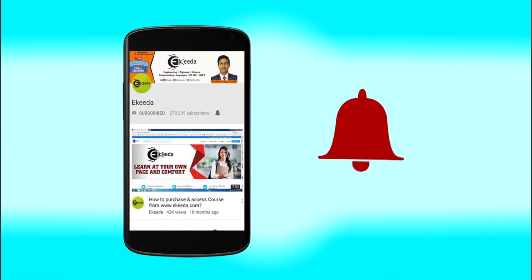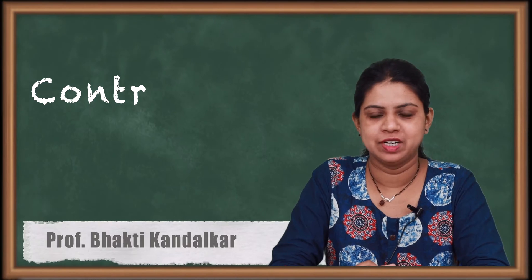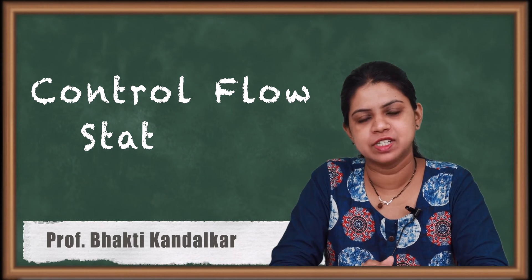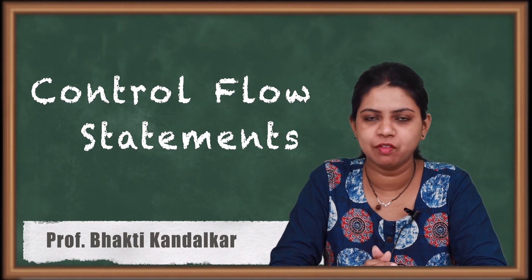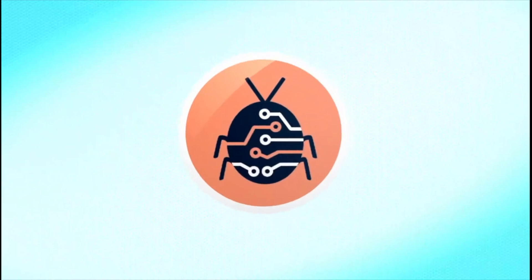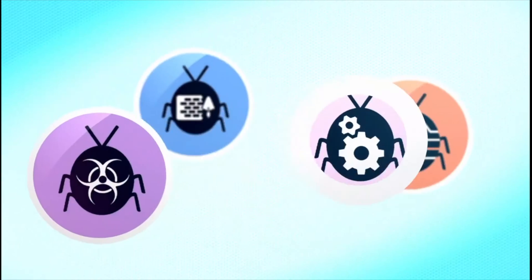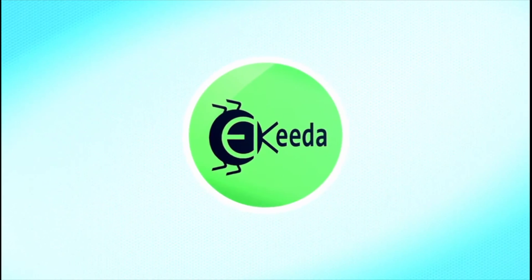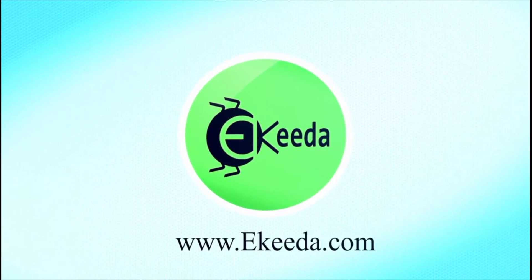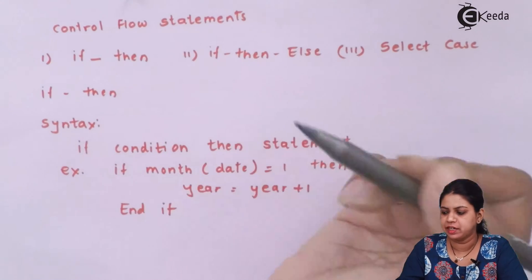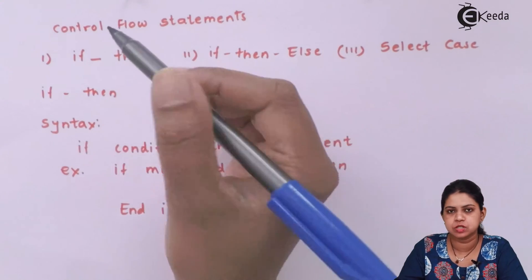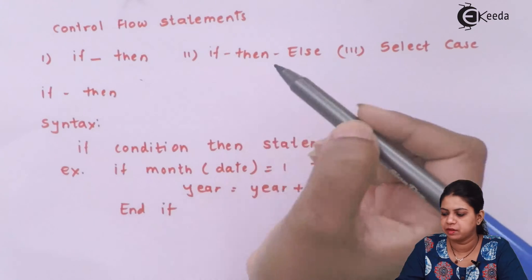Hello friends, in this video we will study various control statements in Visual Basic. There are three types of control flow statements: If-Then, If-Then-Else, and Select Case.